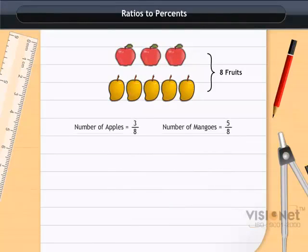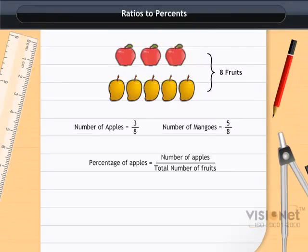To calculate the percentage of apples, we divide the number of apples by the total number of fruits and multiply by 100 with a percentage sign. For example, percentage of apples equals number of apples divided by total number of fruits times 100%, which equals 37.5%.